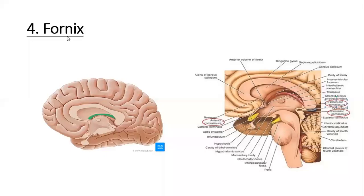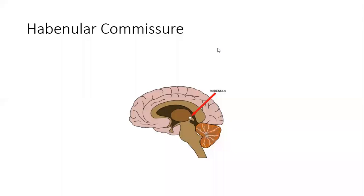The fourth commissural fiber type is the fornix, which is a very important component of the limbic system, particularly forming an efferent pathway for the hippocampus. The habenular commissure is the nerve fiber bundle in the white matter of the cerebrum connecting the habenular nuclei on either side of the diencephalon, and this set of fibers is located in front of the pineal gland.